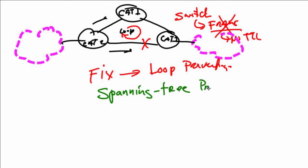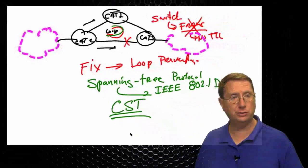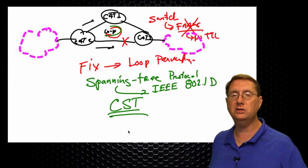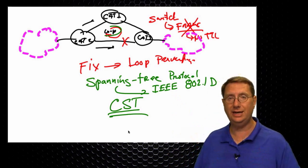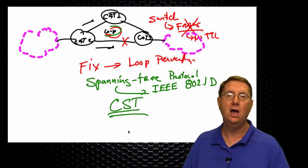Spanning Tree Protocol is the answer to this scenario where we can accidentally induce a loop. The spanning tree is going to give us a loop-free topology. This is an industry standards process that was mandated by IEEE, designated 802.1D. 802.1D defines something called CST — Common Instance Spanning Tree — which is really important to us because we want to have these redundant connections in our infrastructure while avoiding the catastrophic process of a loop.